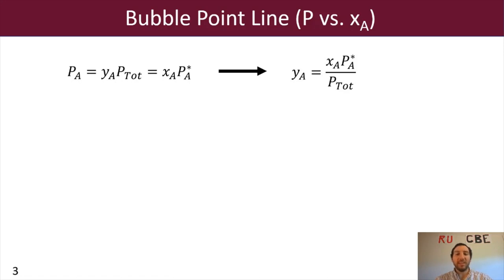And what we can do is we can say that since the sum of all Y's have to equal 1, we can then say that the sum of all XI PA star over P total should also equal 1. Because we just said before, they are equivalent.